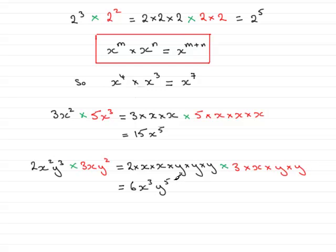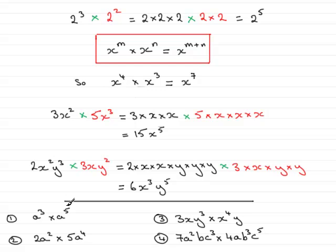OK. Now, what I've done next is just set some questions for you to try. I'll bring them up there. OK. Four questions. So that's a cubed times a to the 5. 2a squared times 5a to the 4. 3xy cubed times x to the 4y. And then finally, number 4. 7a squared b c cubed multiplied by 4ab cubed c to the 5. So you might like to pause the video or jot these down on a piece of paper and answer them. And then restart the video again in a few moments and I will give you the answers.